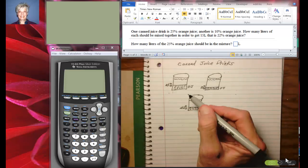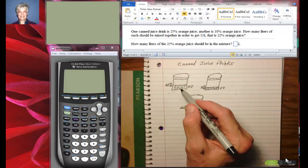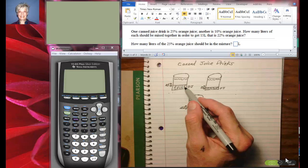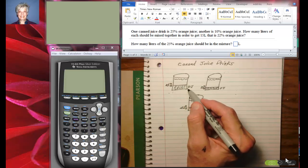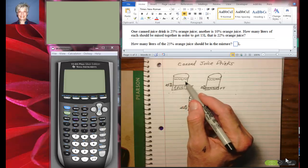I just wanted to give you an idea of what 25% orange juice means. That means 25% of all of the liquid in the can is actually really orange juice and the rest of the liquid is something else.